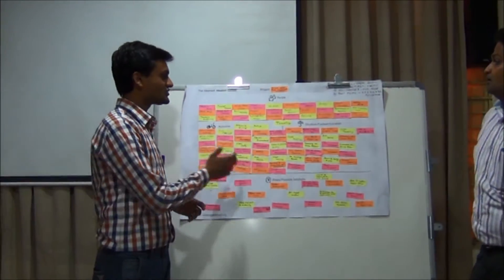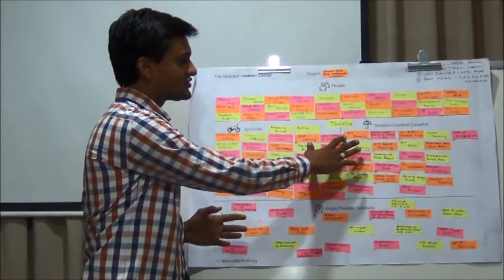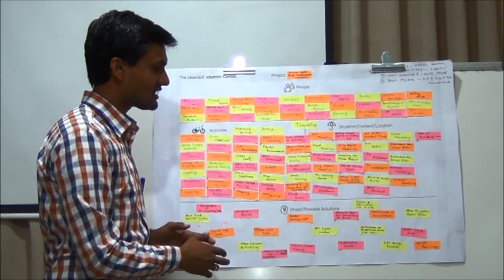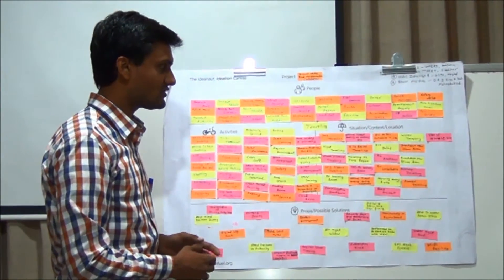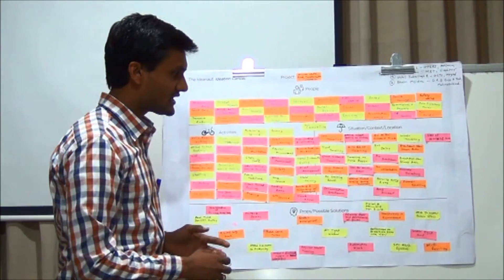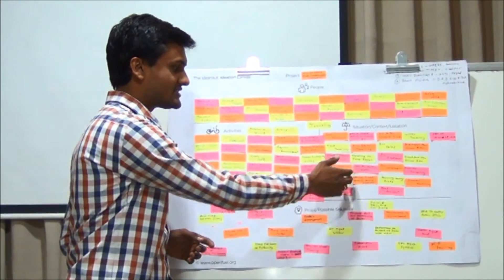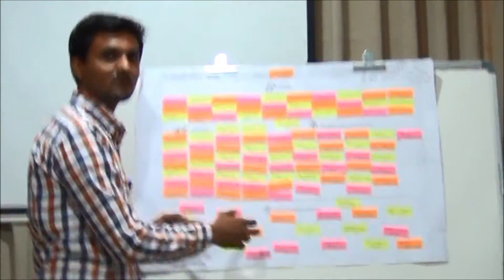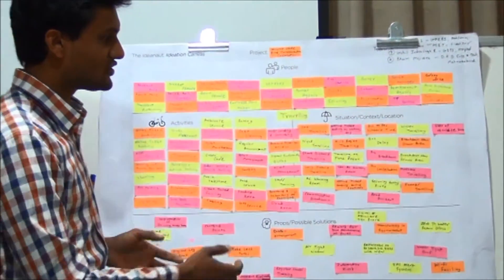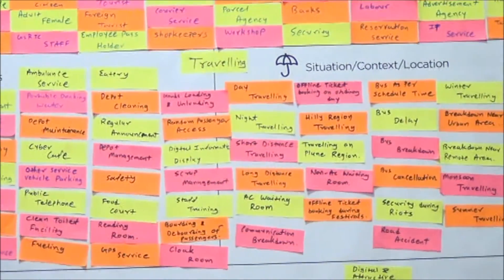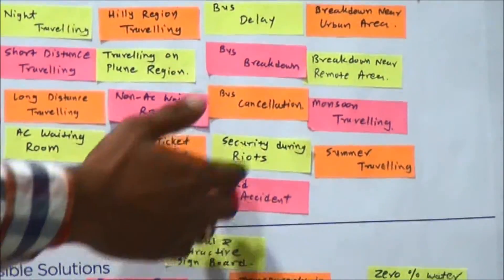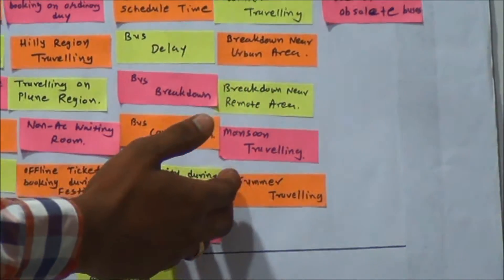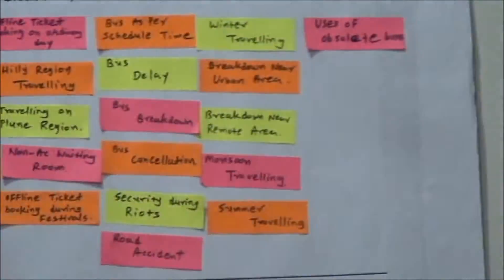According to the activities, the situations that come under our canvas are: day travelling, night travelling, short distance travelling, long distance travelling, AC waiting room, communication breakdown, offline ticket booking on an ordinary day, hilly region travelling, travelling on a plain region, non-AC waiting room, offline ticket booking during a festival, very rough days, bus as per schedule time, bus delay, bus breakdown, bus cancellations, security during riots, road accidents, winter travelling, breakdown near urban area, breakdown near a remote area, monsoon travelling, summer travelling, and use of offline buses.